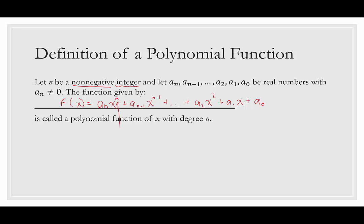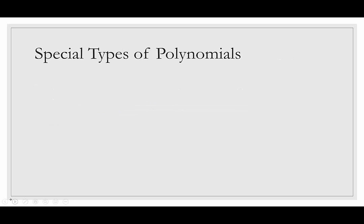The n is what's called our degree, and that's a non-negative integer — so it just has to be a somewhat normal number. It could be zero, seven, or nineteen, but it can't be negative and it can't be a decimal or fraction.